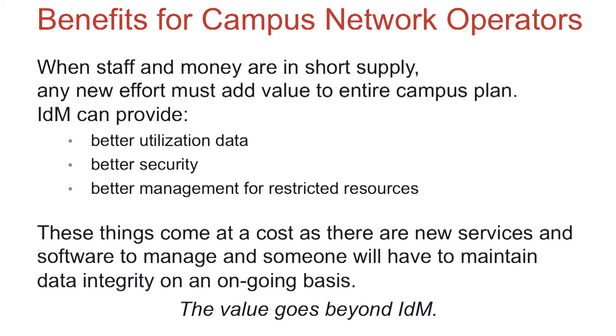Knowing both what devices and what users are on the campus network allows for better business decisions. Administrators have a greater understanding of how bandwidth is utilized and can manage the security of the network on a much more granular level. The protection of assets can happen in a properly layered fashion, starting with the network in support of whatever system authorization controls are in place. Of course, the campus will not get this valuable level of control without cost. Identity services must be managed and the data integrity maintained in order for the information to remain useful and valuable to administrators.